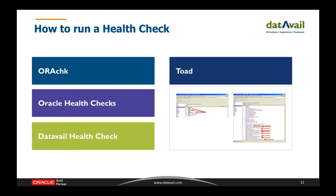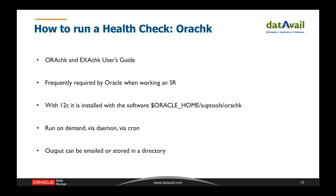Now I'll talk about how to run a health check. I'm going to cover four methods: OraCheck, Oracle Health Monitor, TOAD, and partnering with a company like DataVail. To start using OraCheck, I recommend reading the documentation called the OraCheck and ExaCheck User's Guide. This health check comes installed with 12c under the Oracle Home subtools OraCheck, which I love because downloading a health check in the midst of a crisis consumes precious moments. When you do run OraCheck, you may be notified it's out of date and prompted to run the latest version, which can always be found under Oracle Note 1268927.2.